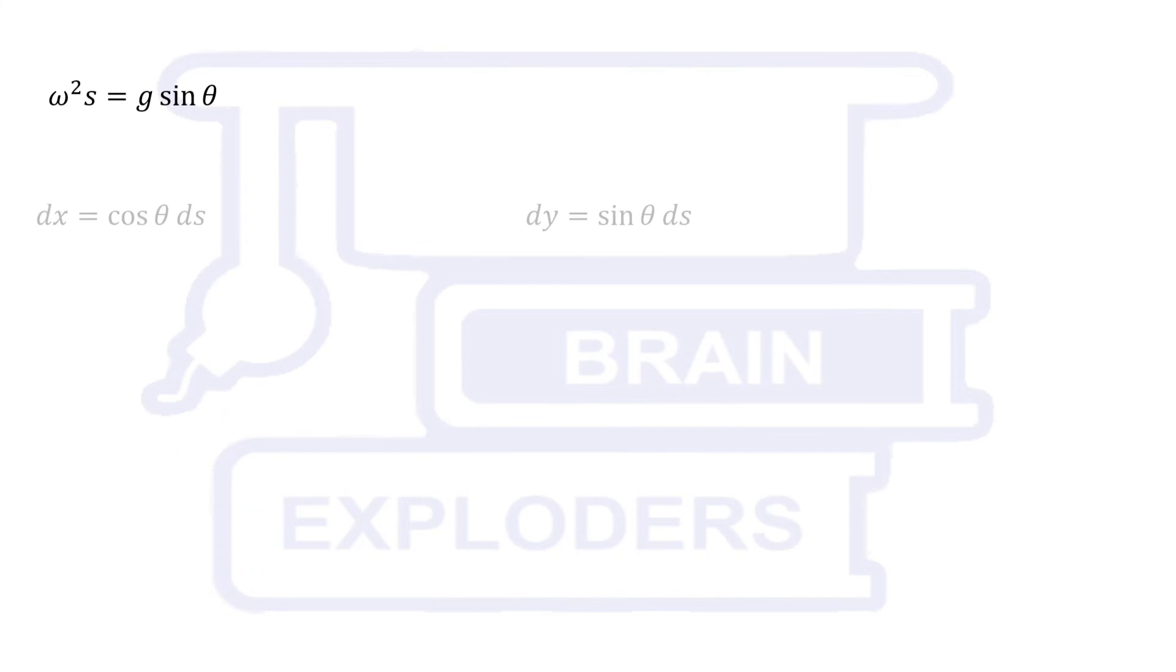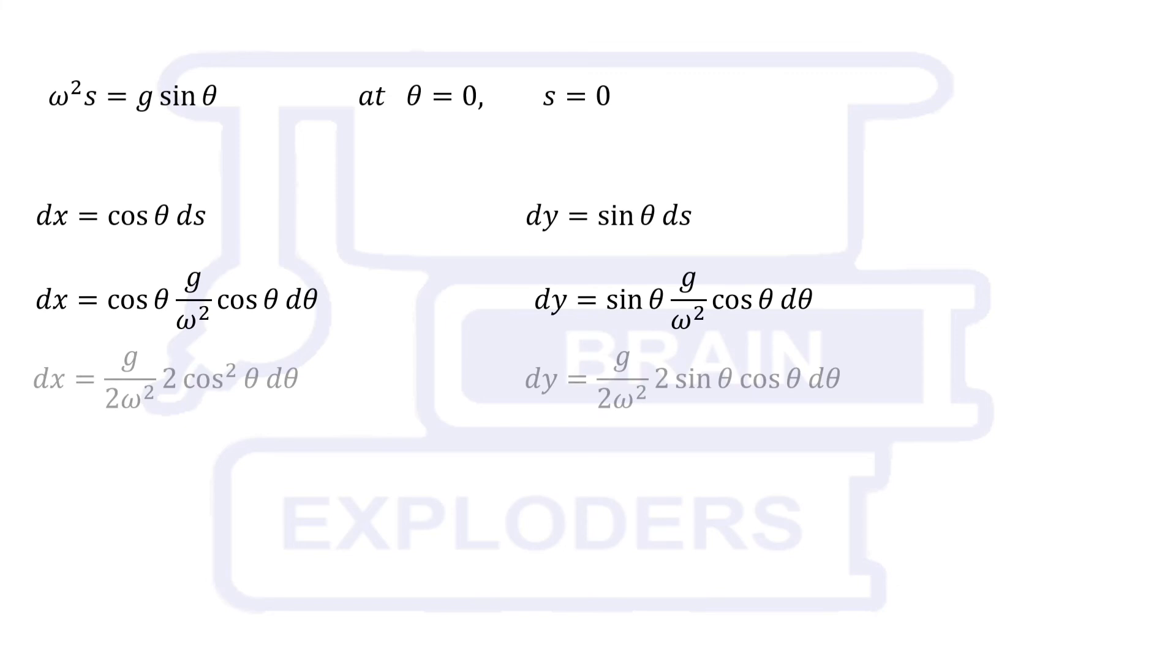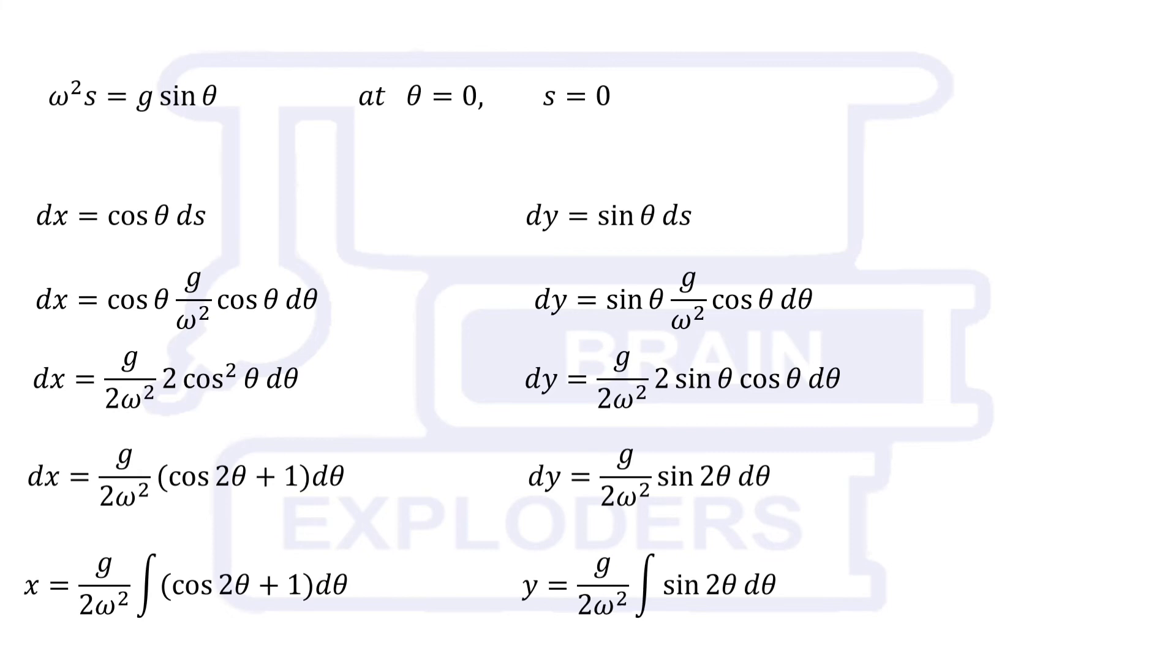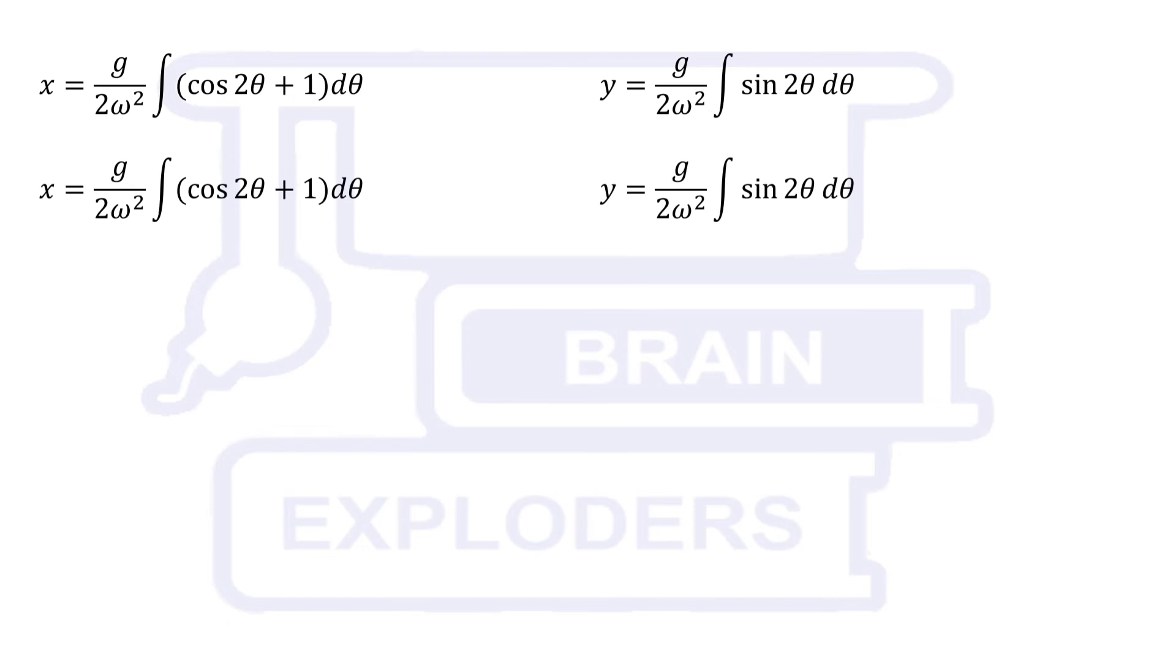Substitute ds in these equations. 2 cos squared theta is equal to cos 2 theta plus 1, and 2 sin theta cos theta can be written as sin 2 theta. Further steps of integration are shown on the screen.